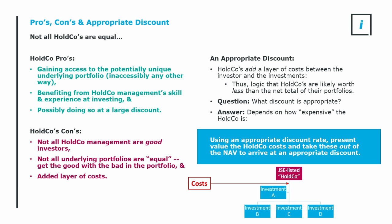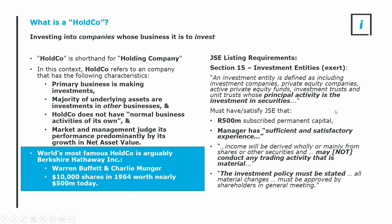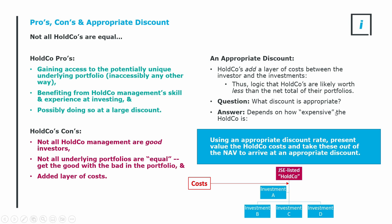So that is what a holdco is. Zooming back to this graphic, it now makes more sense. On the JSE, you've got one company listed — it itself doesn't necessarily have an operational business. It is an allocator of capital into other businesses, and those businesses run operational businesses. This holdco aims to grow its net asset value.